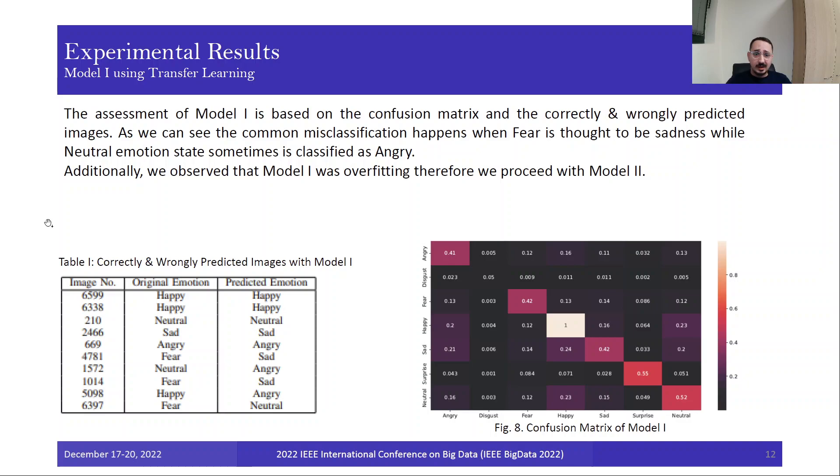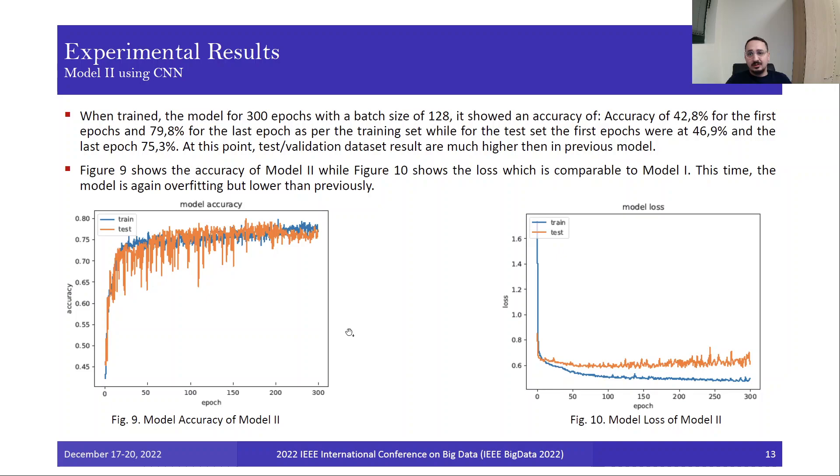Now we have the confusion matrix, and next we move to the second model. The assessment of this model is based on the confusion matrix shown here by the correctly and wrongly predicted images. We have the images, the original emotion, the predicted emotion, while misclassification happens mostly when fear is thought by the program to be sadness, while the neutral emotion in most cases is classified as angry. Additionally, we observe that model 1 is overfitting, and we therefore proceed with model 2.